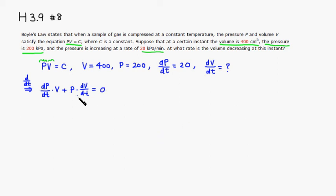We're going to take the derivative of the volume with respect to t. Then what you're looking for is dV/dt. So let's try to isolate that first. So we're going to subtract dP/dt times V. That way you have P times dV/dt. This is equal to negative dP/dt times V.